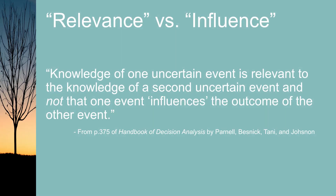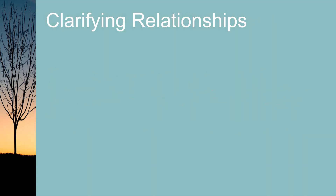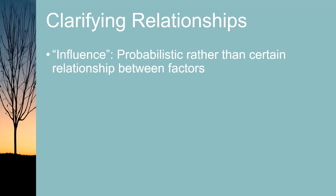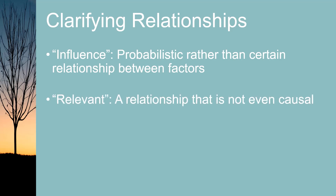Sometimes the name used tries to clarify the relationship between the factors. One of the developers of these diagrams prefers the term relevance to influence, because knowledge of one uncertain event is relevant to the knowledge of a second uncertain event — not that one event influences the outcome of the other. This may seem like semantic hair-splitting, but the relationship between factors in a decision is crucially important. The term influence diagram reflects the probabilistic rather than certain relationship between factors, while relevance indicates a relationship that is not even causal.